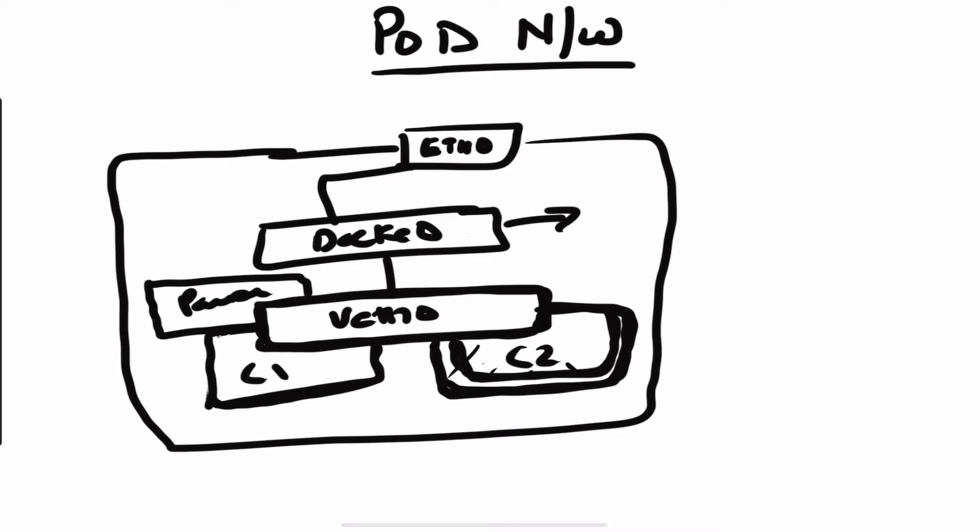This is still incomplete, because in Kubernetes one pod can reach out to another pod on its IP address. So how does that communication happen? The really useful feature of Kubernetes actually comes when we are able to send data from one pod to another. Let's see how that happens.